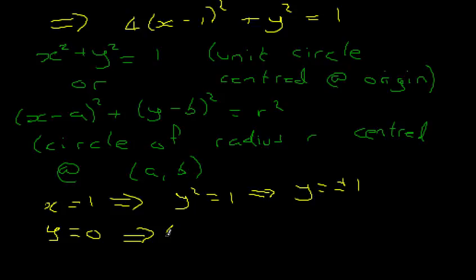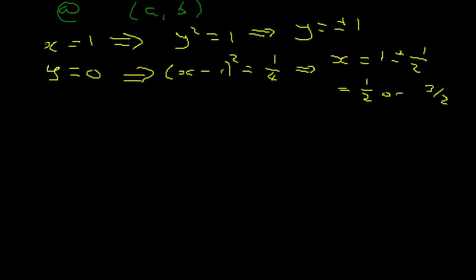And the other reasonable value to get rid of this term seems to be y is 0, and this means that, well, x minus 1 squared is 1 quarter, dividing by 4, which means that x is, the square root of a quarter is plus or minus 1 half, and then we add the 1. So this is 1 plus or minus 1 half, which is 1 half, or 3 over 2, okay?